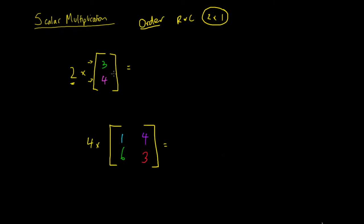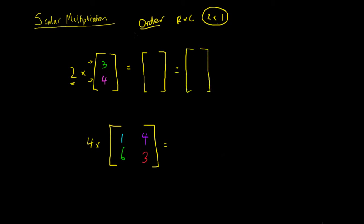When we're doing a scalar multiplication, it's only going to change the size of the numbers inside the actual matrix. So we can say: if it's not going to change the order and we have a 2 by 1 matrix — two rows by one column — we're going to end up with another matrix of the same order after we finish the multiplication. So it's also going to be 2 by 1. The way we do a scalar multiplication is: any number out the front, every term inside the matrix gets multiplied by that number.